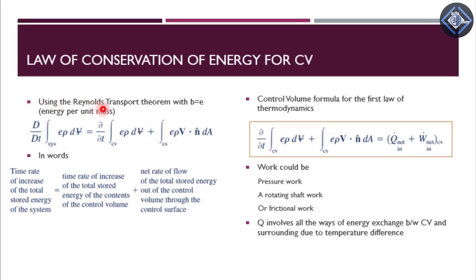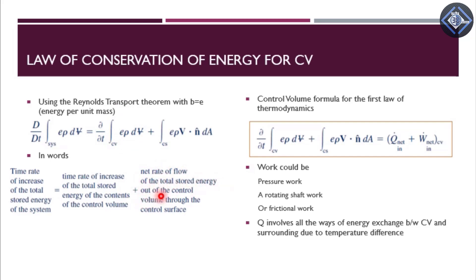Now we apply the Reynolds transport theorem with B equal to e, the energy per unit mass. In words, the first term on the left-hand side is the time rate of increase of the total stored energy of the system. The second term on the right-hand side is the time rate of increase of the total stored energy of the contents of the control volume — the rate of change of energy of the matter inside the control volume. The third term is the net rate of flow of total stored energy out of the control volume through the control surface.